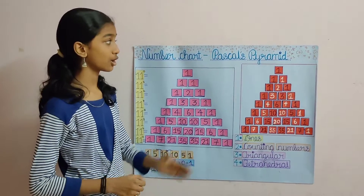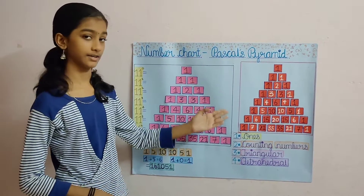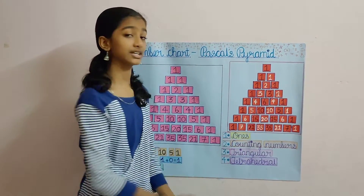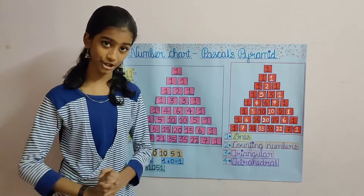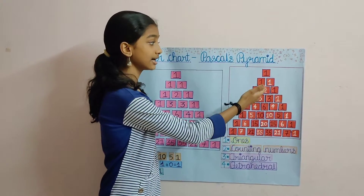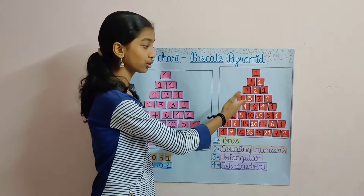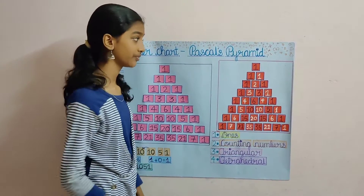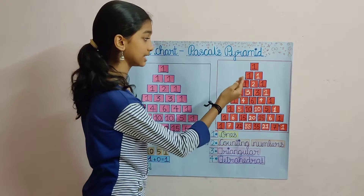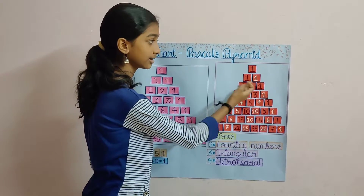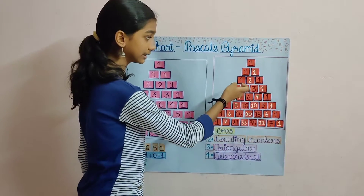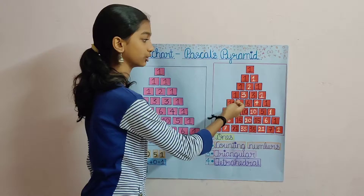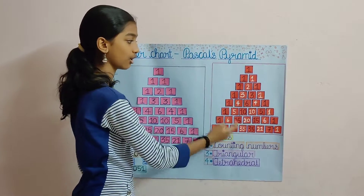Another interesting fact about Pascal's Triangle is that it is also symmetrical — identical numbers on both sides, like mirror images. As you can see here: 1, 1, 1, 1, 1, 3, 3, 1, 1, 4, 4 and so on.